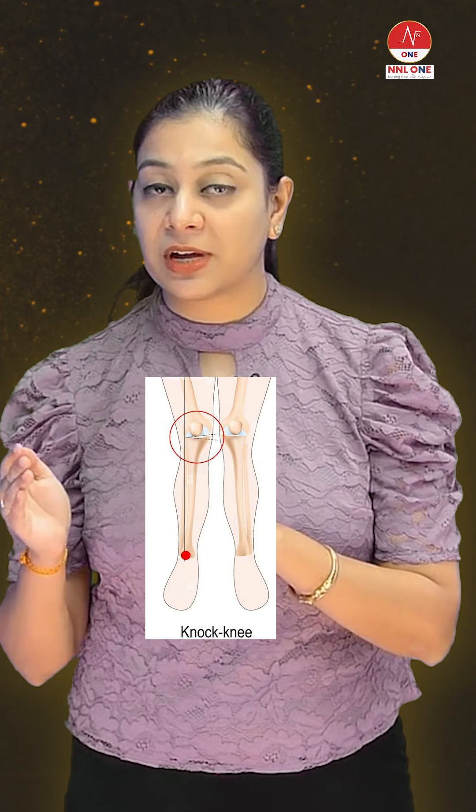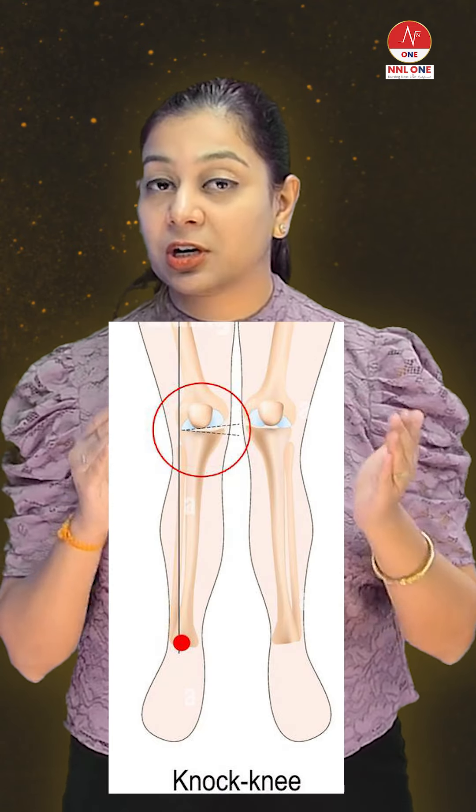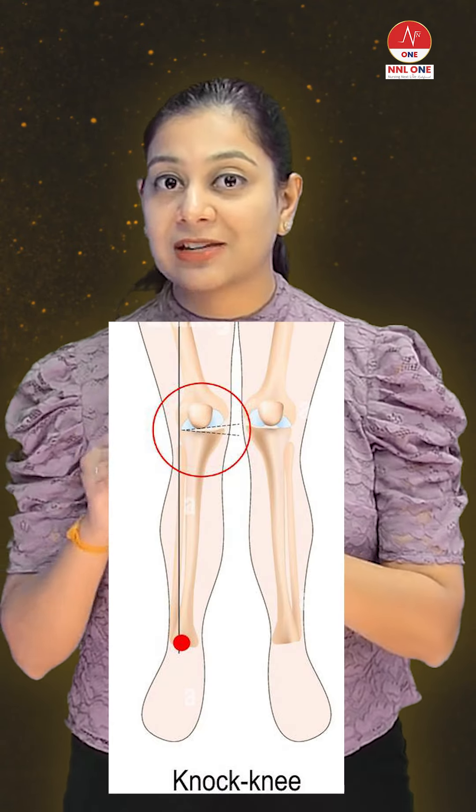In genu valgum, the distal part of the tibia moves away from the body — this corresponds to knock knees. So next time, look into the terminologies to have better clarity.